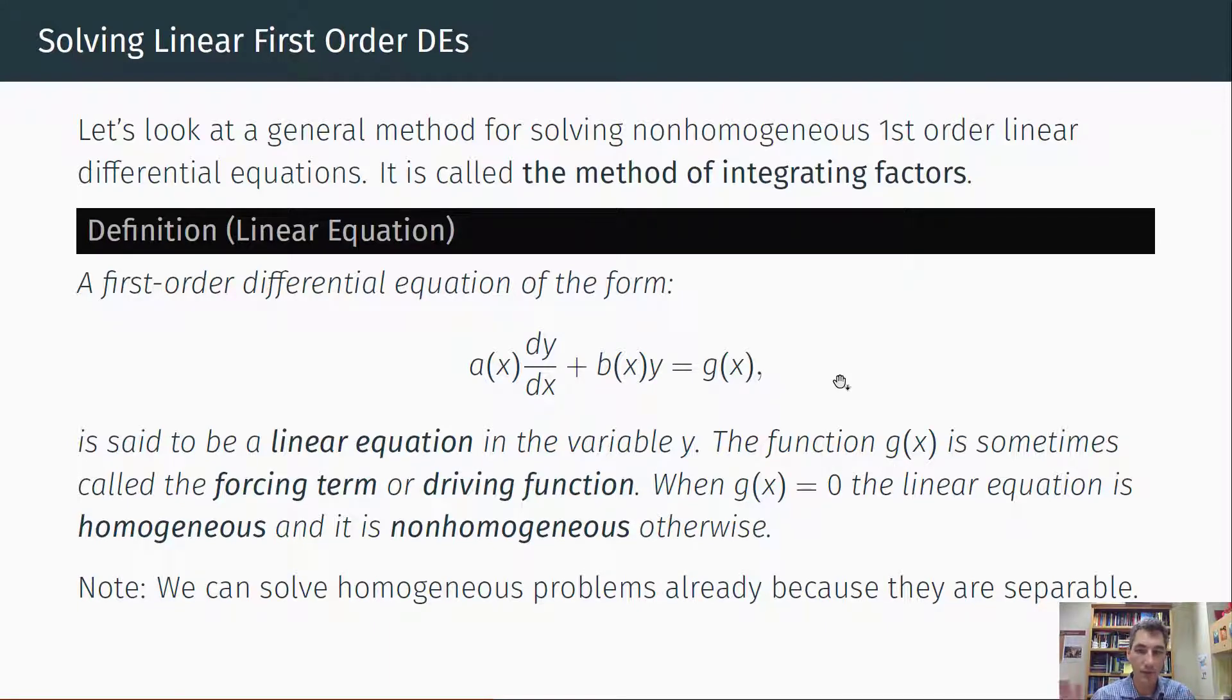And then the g(x), that external function, is called the forcing term, so some external force. If the g(x) happens to be zero, then we call the linear differential equation homogeneous. If g(x) isn't zero, we call it non-homogeneous.